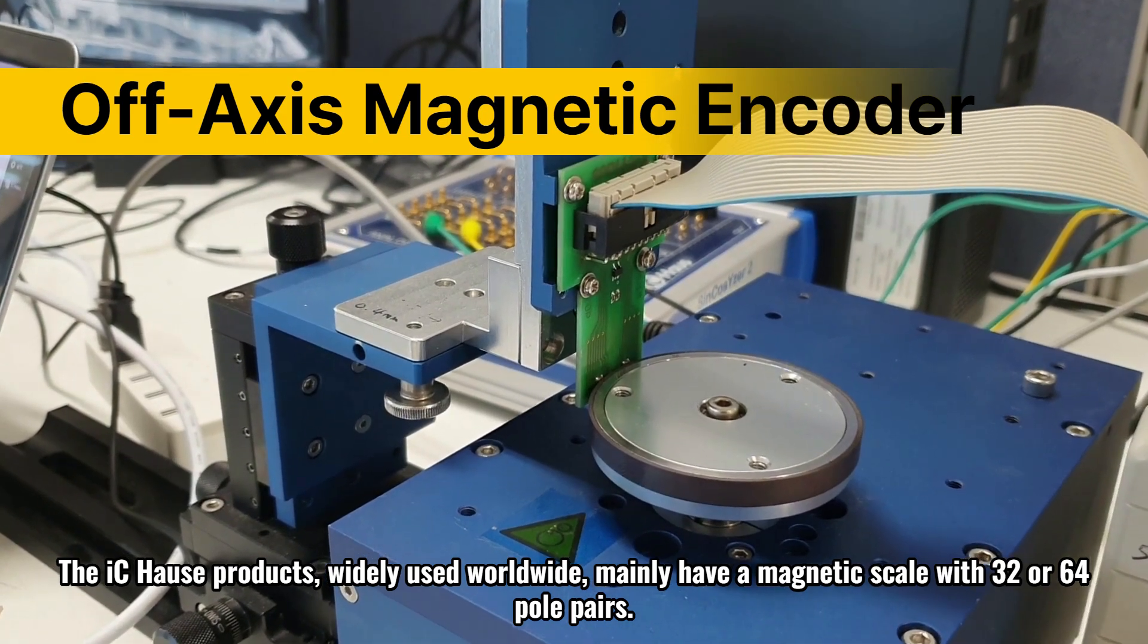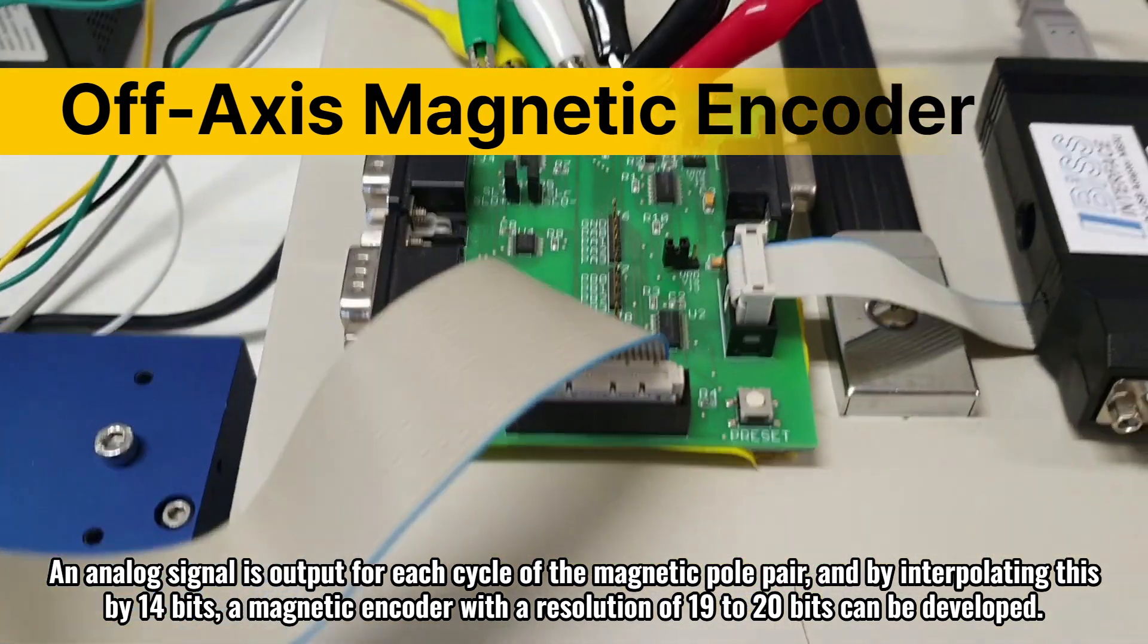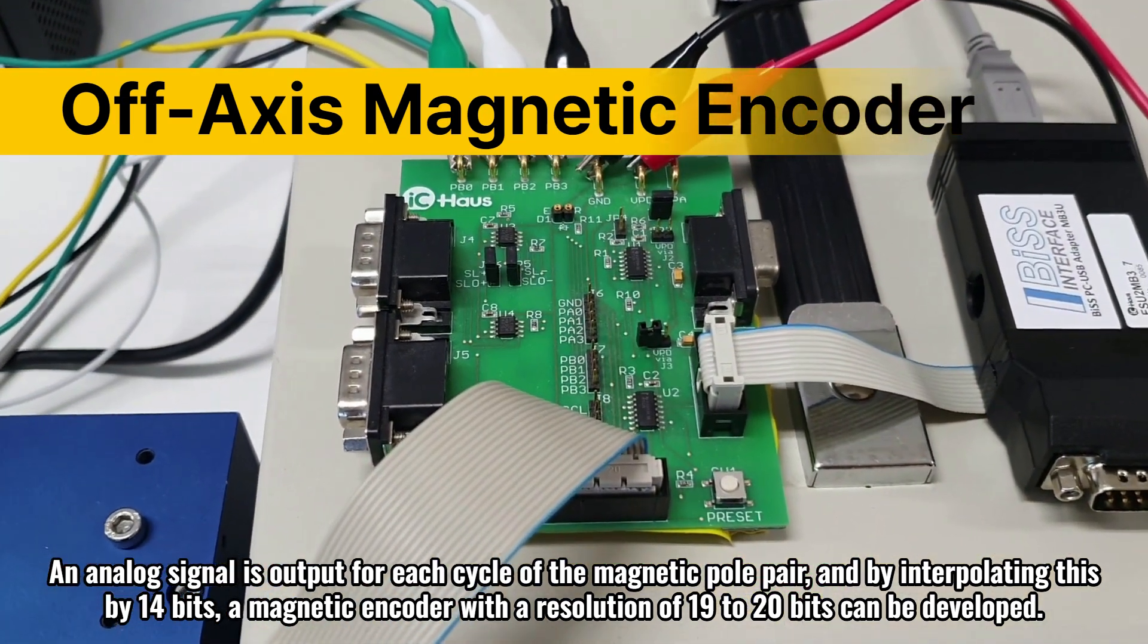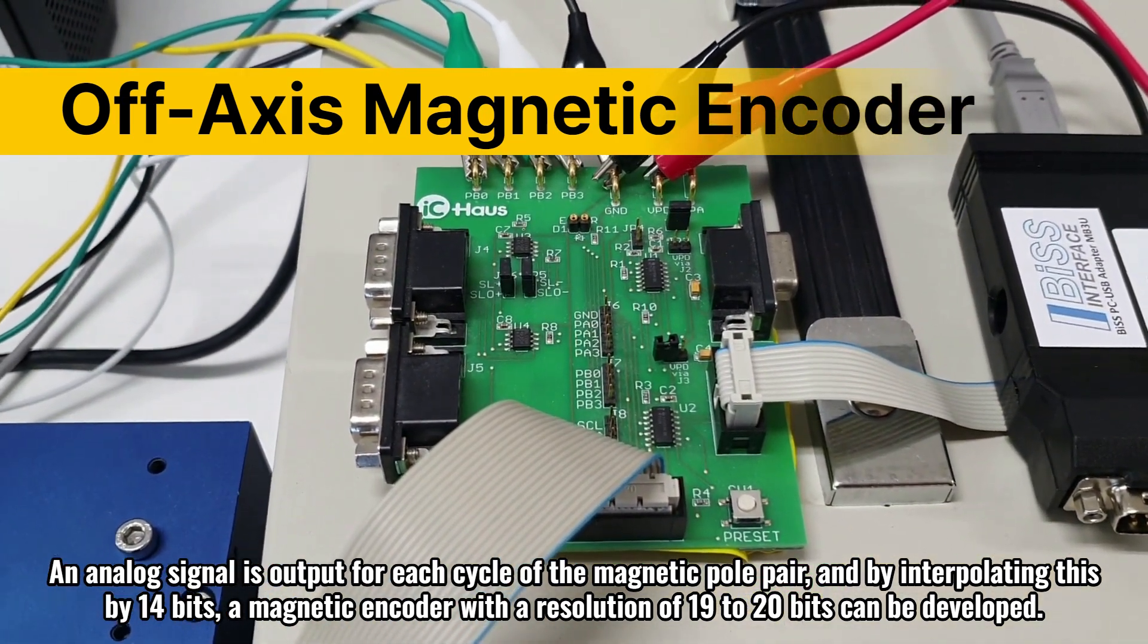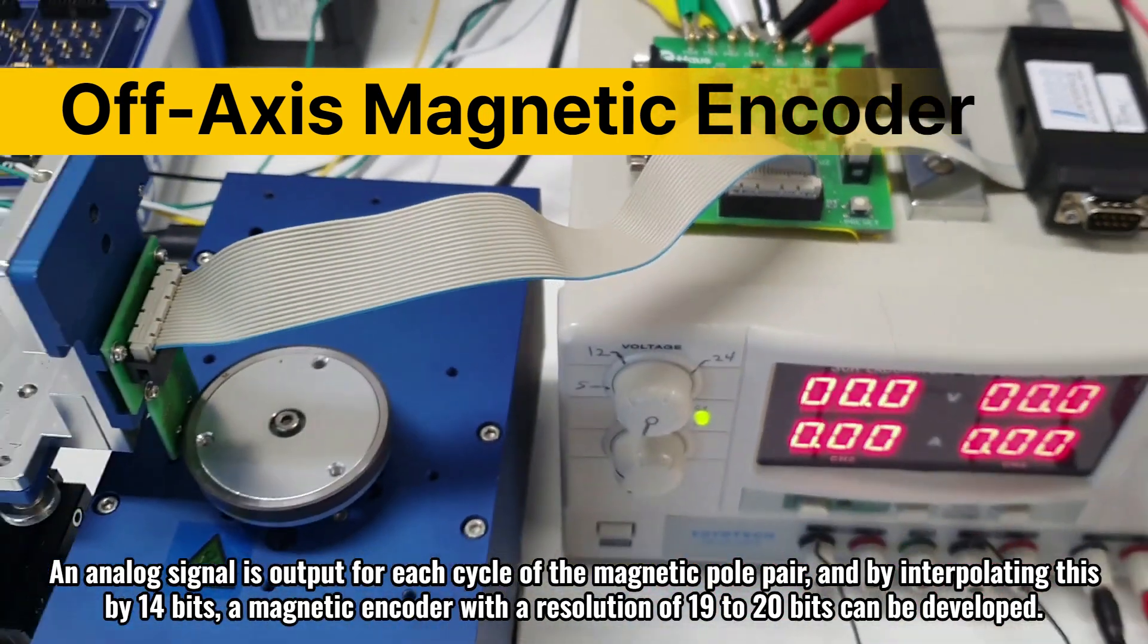The IC house products, widely used worldwide, mainly have a magnetic scale with 32 or 64 pole pairs. An analog signal is output for each cycle of the magnetic pole pair. And by interpolating this by 14 bits, a magnetic encoder with a resolution of 19 to 20 bits can be developed.